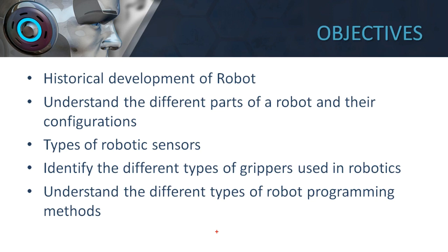You have to identify the different types of grippers used in robotics — why they are used, for what purpose they are used, what are their applications, and how they make a movement. All those things are very important.